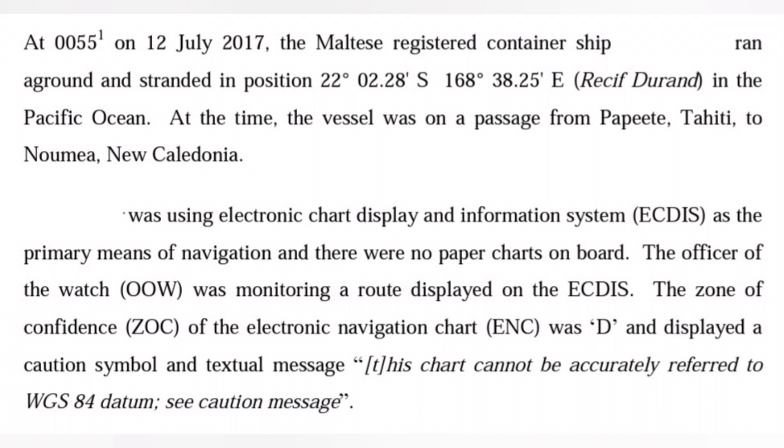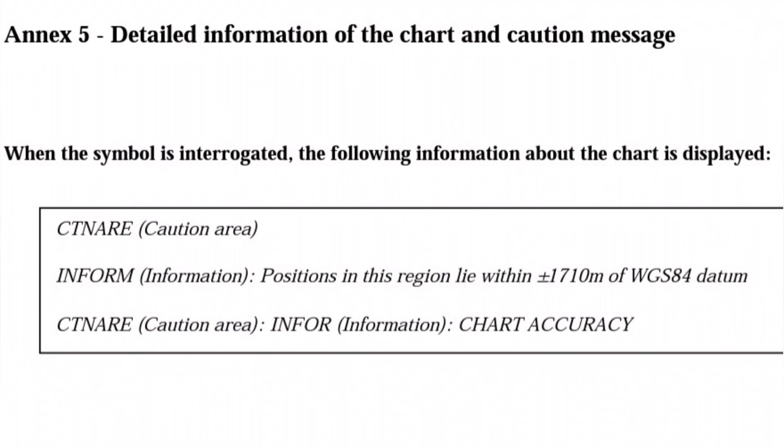Here you can see the detailed information of the chart and caution message on the ECDIS. When the symbol is integrated, the following information about the chart is displayed. You can see the caution area — CT Nare — and the information: 'Positions in this region lie within plus or minus 1,710 meters of WGS-84 datum.' There is clear information regarding the chart accuracy.